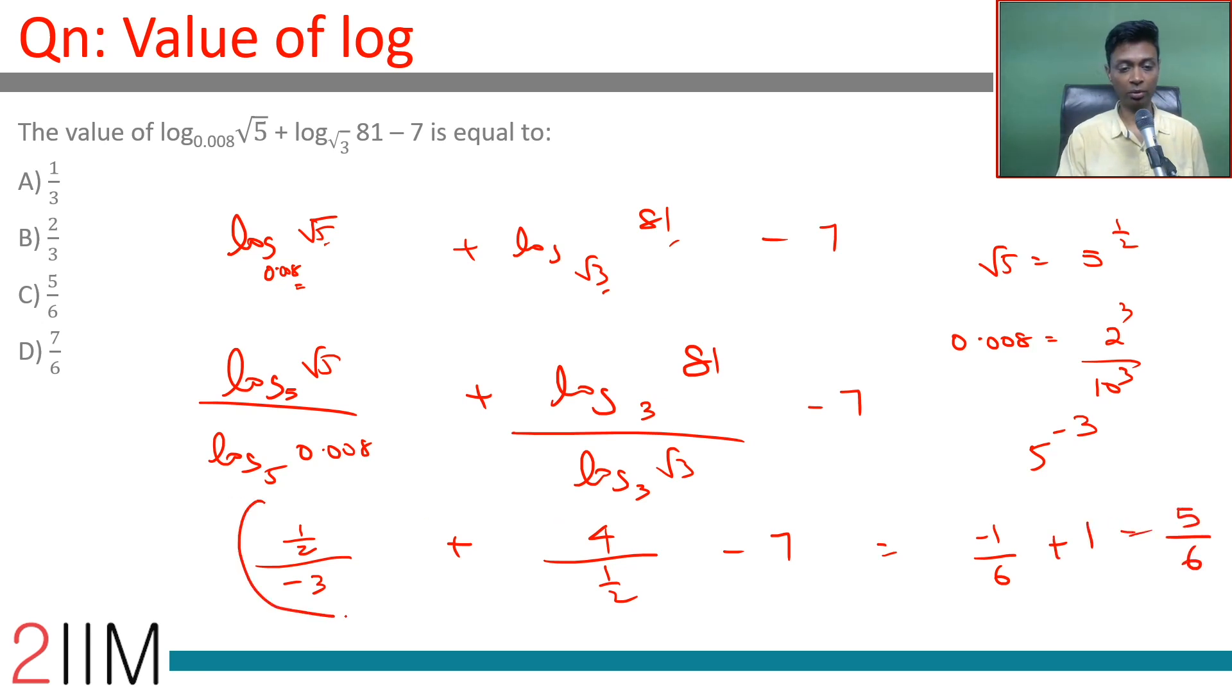This is minus 1 by 6, this is 8 minus 7, so minus 1 by 6 plus 1 is 5 by 6. This is the choice we're looking for.